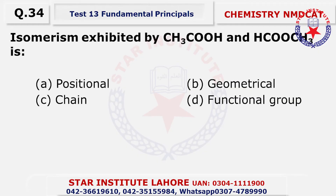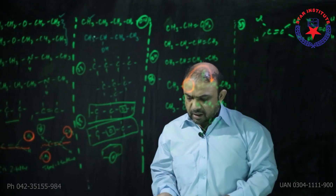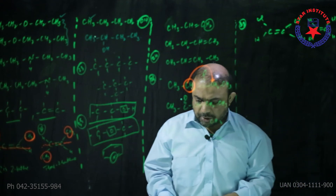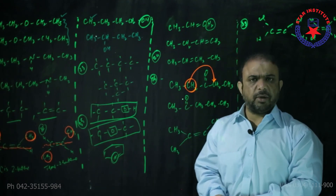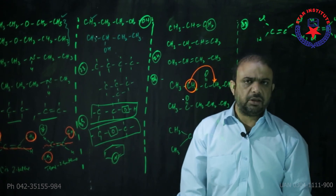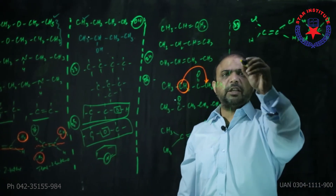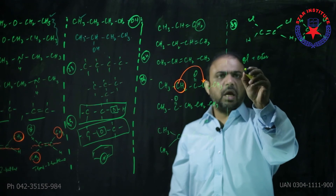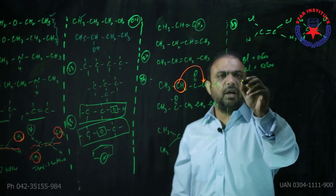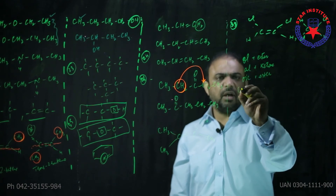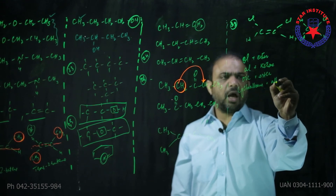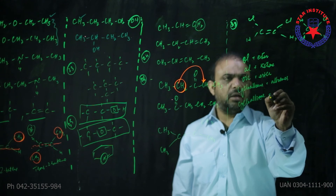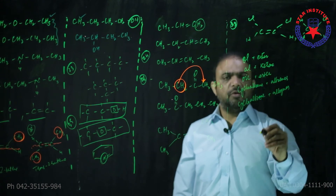Question number thirty-four: Isomerism exhibited by an ester and a carboxylic acid — these are two different functional groups. The isomerism found between them should be functional group isomerism. Functional group isomerism can be found in five popular categories: alcohol and ether, aldehyde and ketone, carboxylic acid and ester, cycloalkanes and alkenes, and alkenes and alkynes — so all of these can show you functional group isomerism.